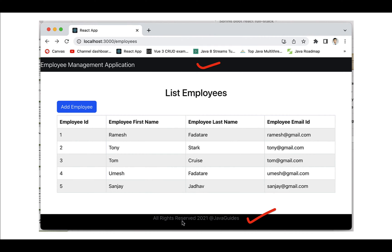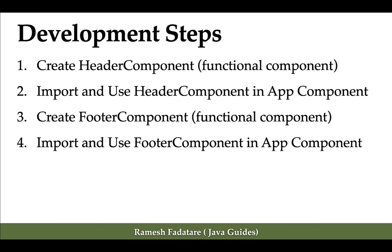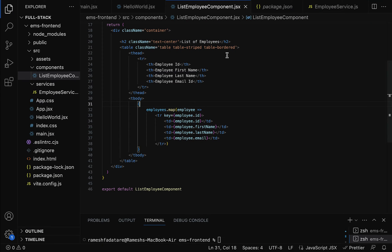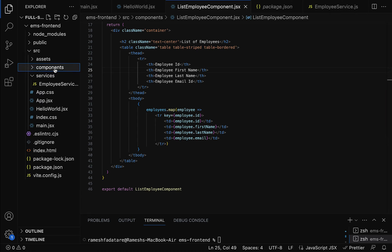Here are the development steps: first we create a header component as a functional component, then we'll import and use the header component in the App component. Next we'll create a footer component as a functional component, and then import and use it in our App component. The first step is to create a header functional component, so let's go to our project and go to the components folder.